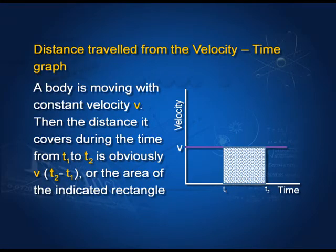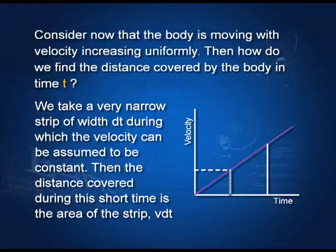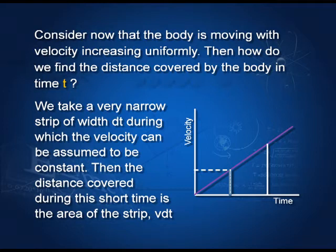Now, given a velocity-time graph, how do we find the distance covered? If the velocity is constant, it is easy: between time t₁ and t₂, the distance covered is v × (t₂ − t₁). But if the velocity is changing uniformly, we divide the graph into very narrow strips. For each narrow strip, we can assume the velocity to be uniform. Therefore, the distance covered equals the area of that strip.